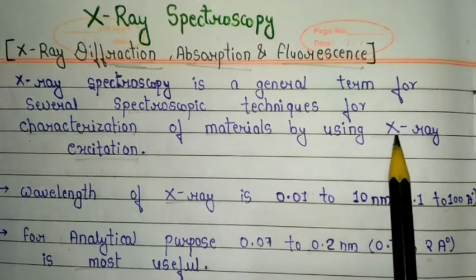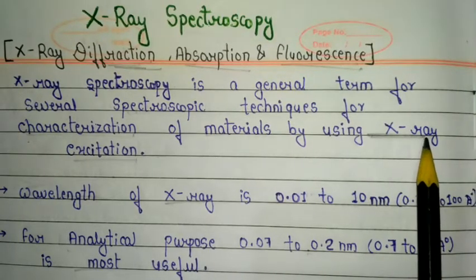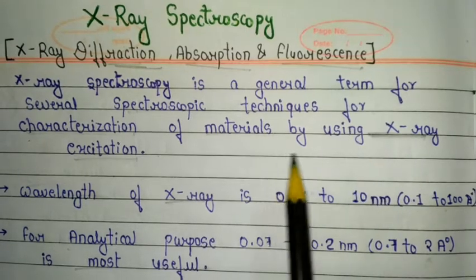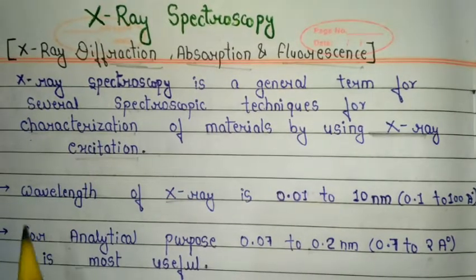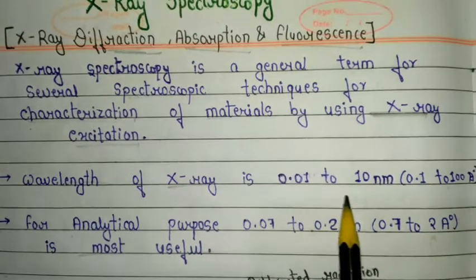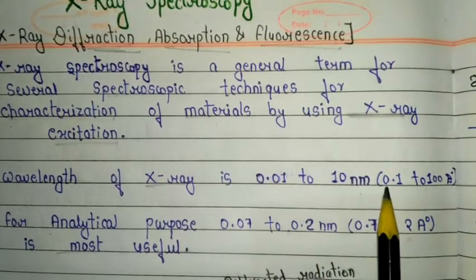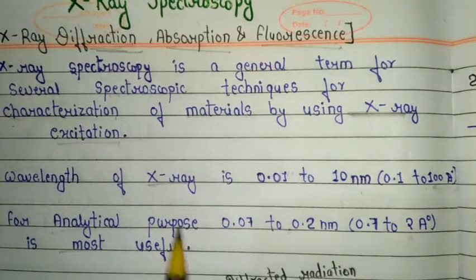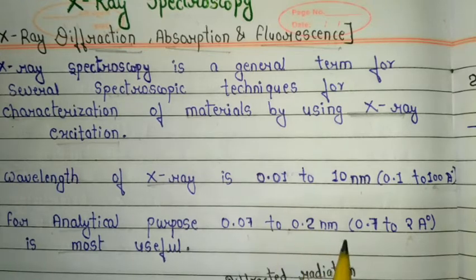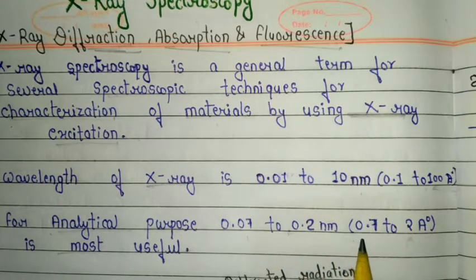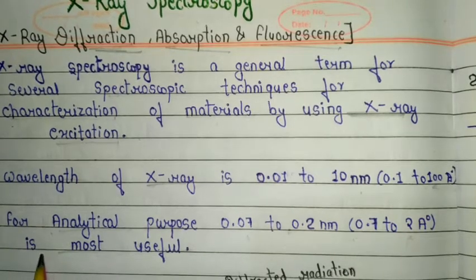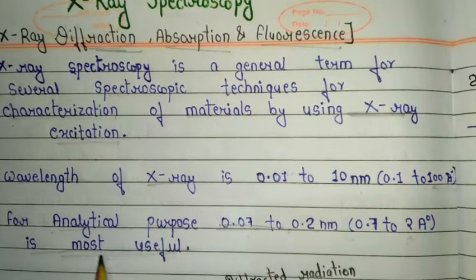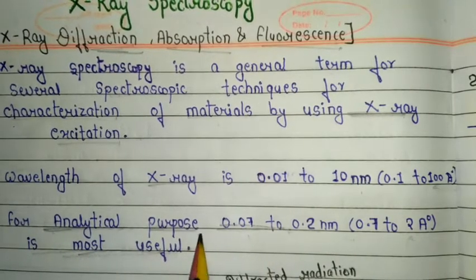In this technique we use X-ray as a radiation source because X-ray is also an electromagnetic radiation. The wavelength of X-ray is 0.01 to 10 nanometers, or we can also call it 0.1 to 200 angstroms. For analytical purposes, 0.07 to 0.2 nanometers, also called 0.7 to 2 angstroms, is most useful for X-ray spectroscopy.